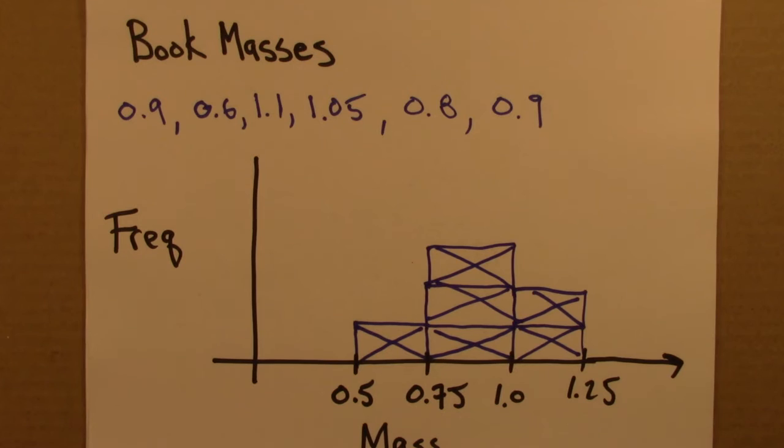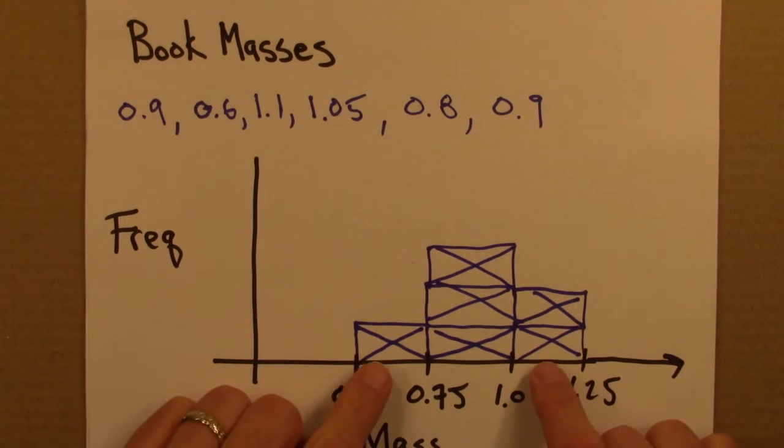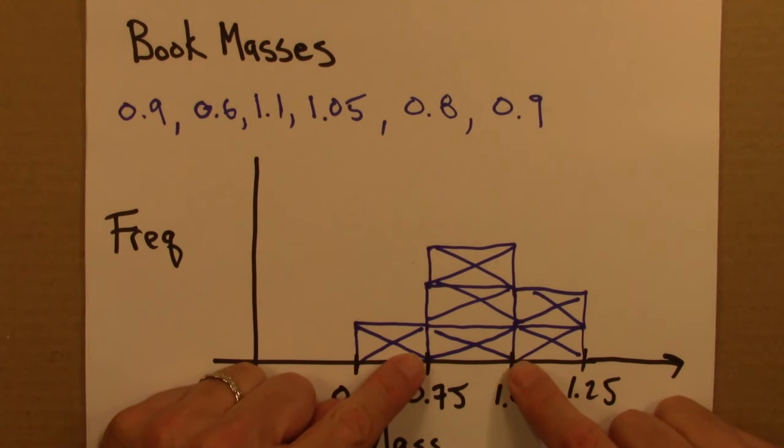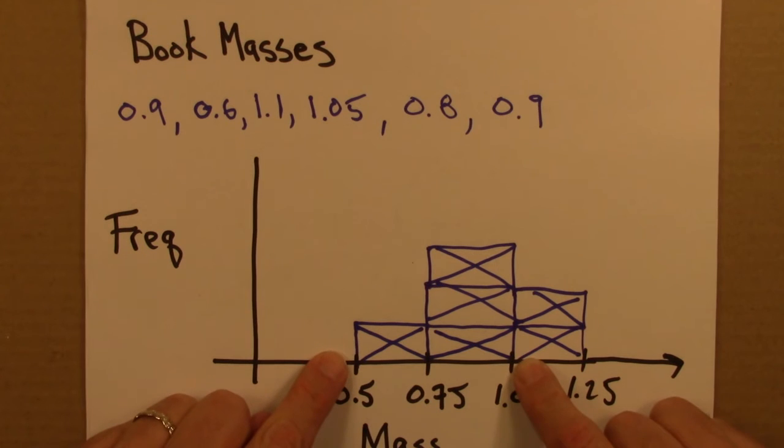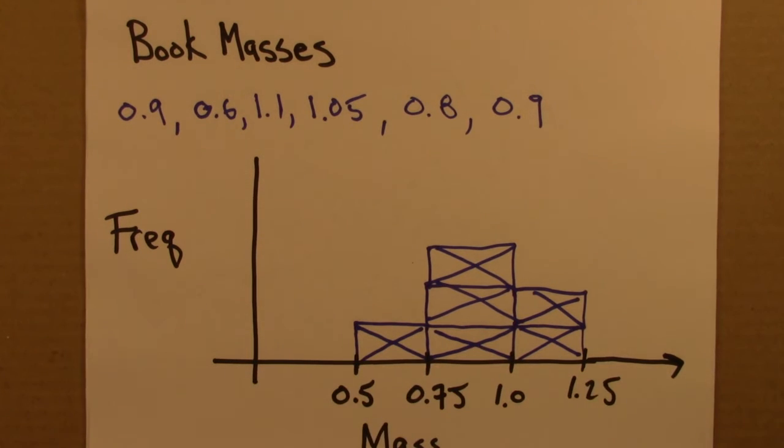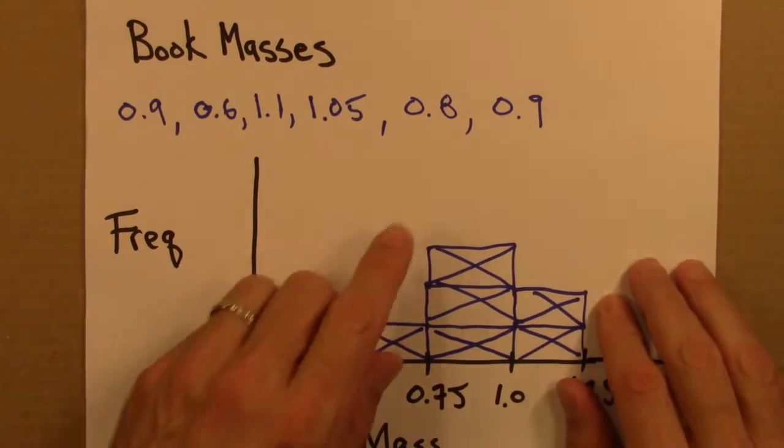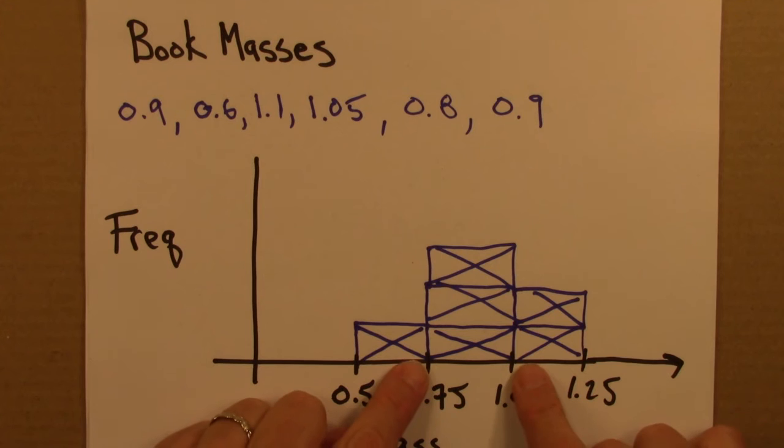So the picture here is as follows. What this type of plot shows me is that there are three books that have a mass between 0.75 and 1. There's one book that's between a half a pound and 0.75, and there are two books that are between 1.0 and 1.25. So a histogram is a way of just summarizing a bunch of data. And this shows us what the frequency is.